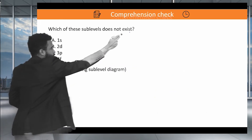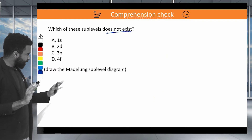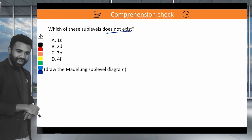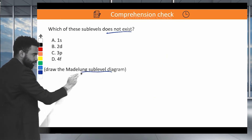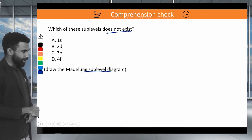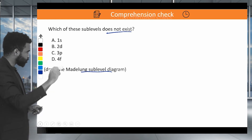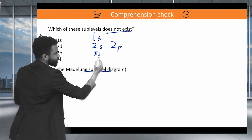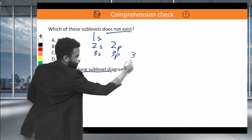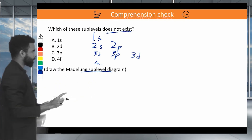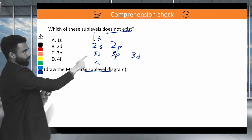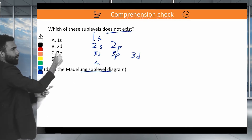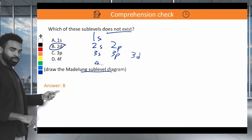Which of these sublevels does not exist? Draw the Madelung diagram: 1S; then 2S, 2P; then 3S, 3P, 3D. For level 2, we only have S and P — there is no 2D, nor a 2F. So the sublevel 2D does not exist, and that is the answer: B.